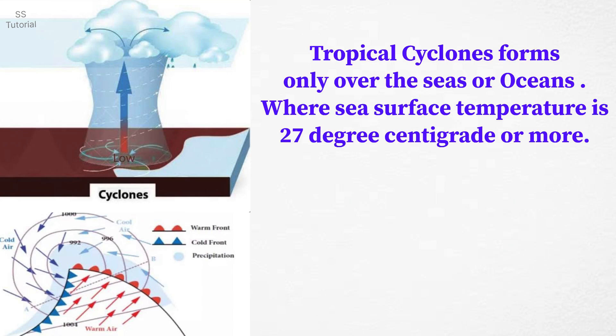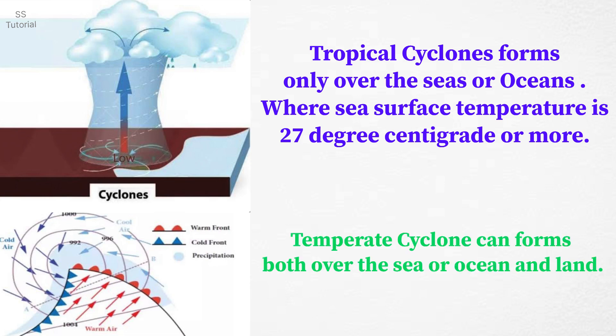Tropical cyclones form only over the seas or ocean where temperature is 27 degree centigrade or more. Whereas temperate cyclones can form both over the land and ocean.